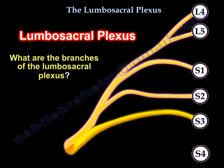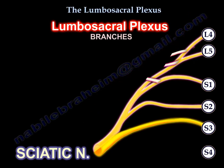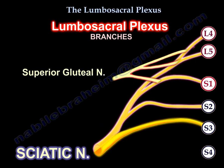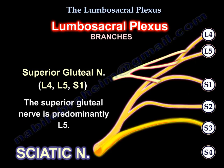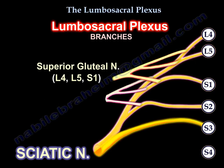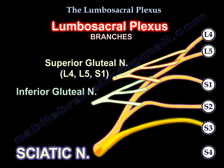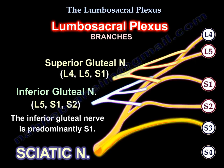What are the branches of the lumbosacral plexus? The superior gluteal nerve — superior meaning higher — arises from L4, L5, and S1, and is predominantly L5. Following that is the inferior gluteal nerve, which is lower by just one nerve root, arising from L5, S1, and S2, and it is predominantly S1.